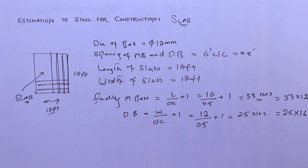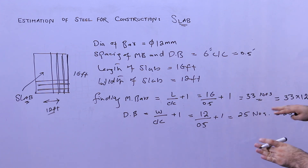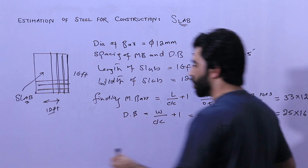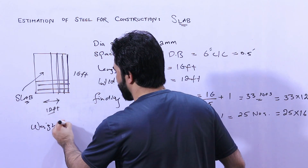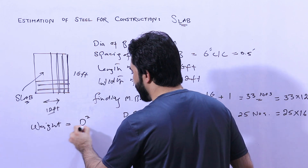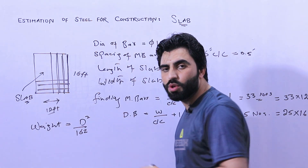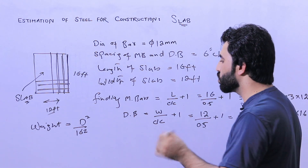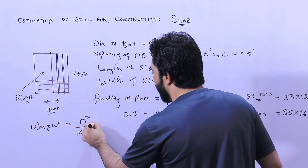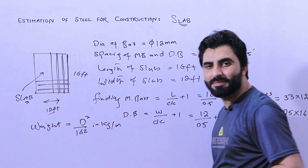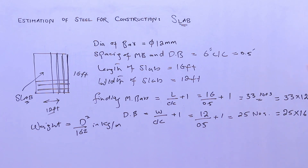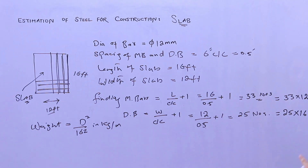Calculate the total length for main bars and distribution bars separately, then add them together to get the overall total length in feet. Next, you can find the weight of steel. The weight formula is D squared divided by 162, which gives you the weight of steel in kg per meter. So this total length in feet must be converted to meters.